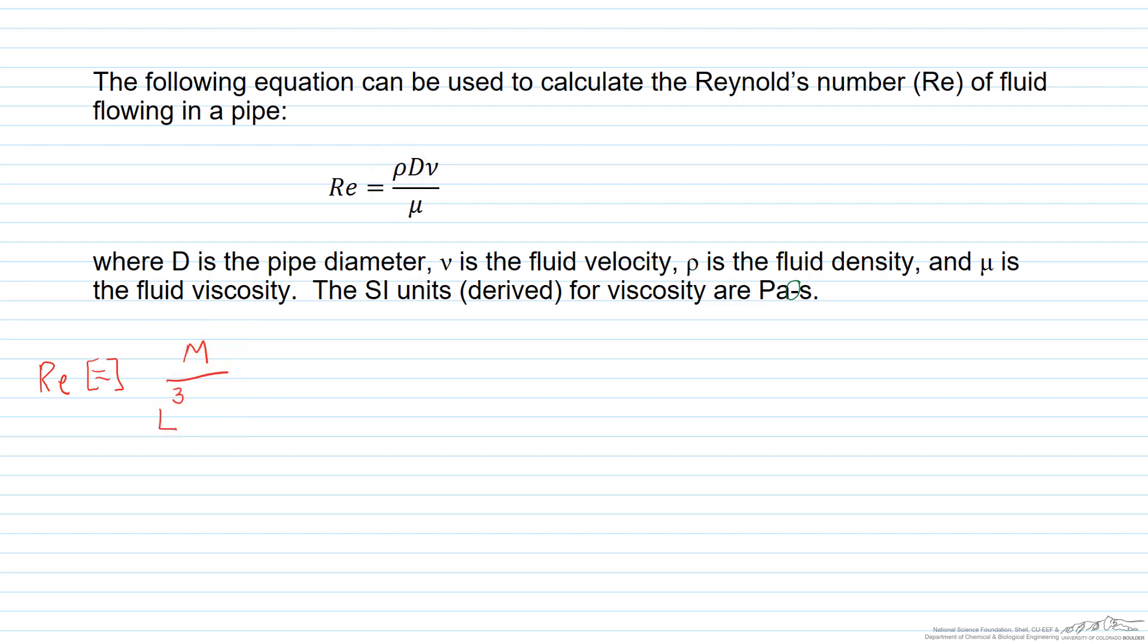And then we also have diameter which is a length scale. So we're going to multiply by length, that's diameter. We've got fluid velocity. Velocity is in length per time. So I'm going to put length in the numerator, time in the denominator.